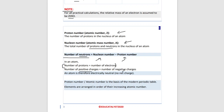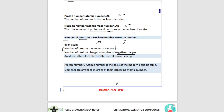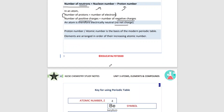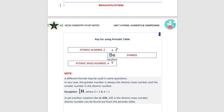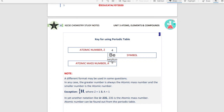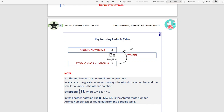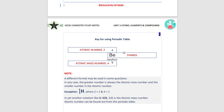The proton number, or atomic number, is the basis of the modern periodic table, and elements are arranged in order of their increasing atomic number. For example, beryllium has the atomic number of four and the mass number of nine. Sometimes periodic tables will switch the positions, so to identify which is which, know that the proton number is always the smaller number between the two. Atomic number and proton number mean the same thing.